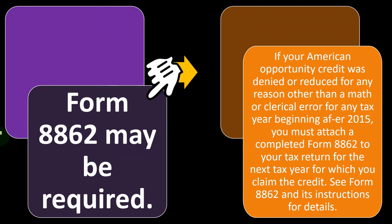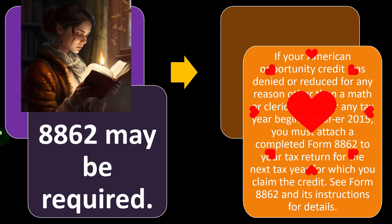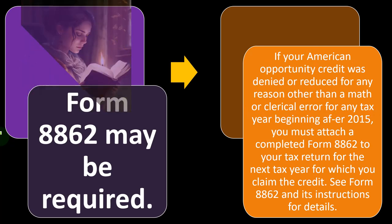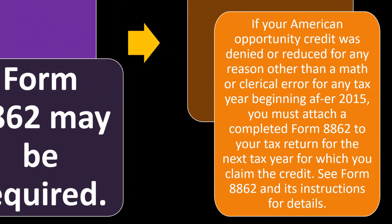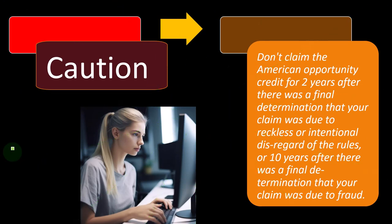Form 8862 may be required if your American Opportunity Credit was denied or reduced for any reason other than a math or clerical error for any tax year beginning after 2015 — you must attach a completed Form 8862. These credits are areas where people try to abuse the tax code, and the IRS puts further restrictions in place. Caution: don't claim the American Opportunity Credit for two years after a final determination that your claim was due to reckless or intentional disregard of the rules, or 10 years after a final determination that your claim was due to fraud.